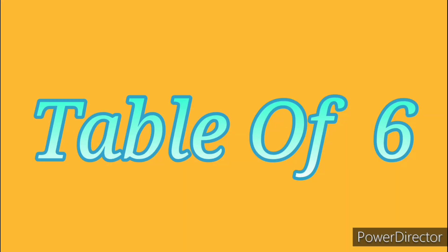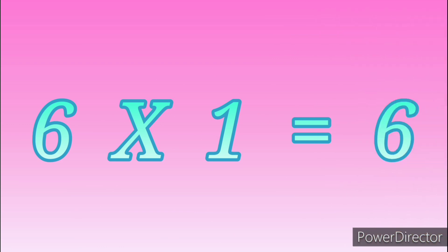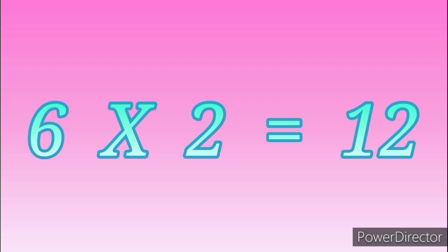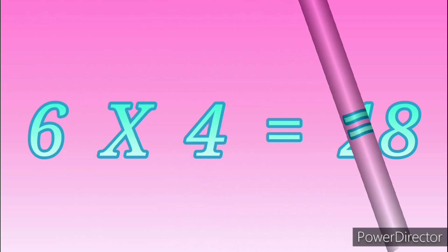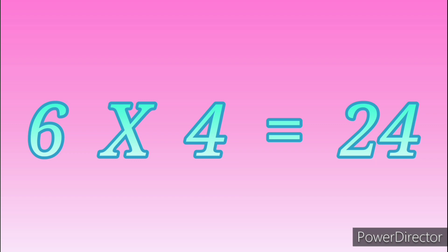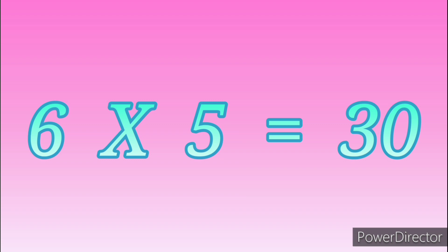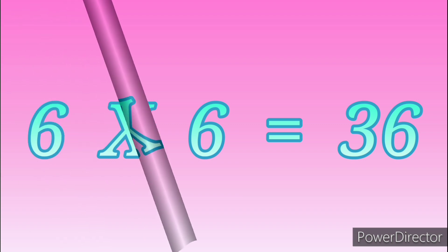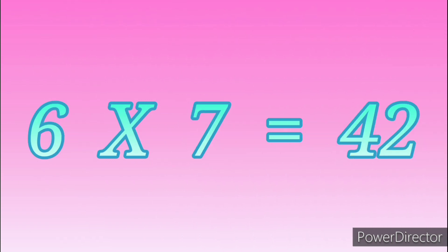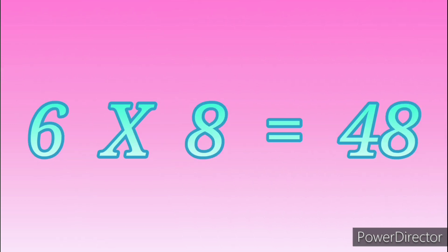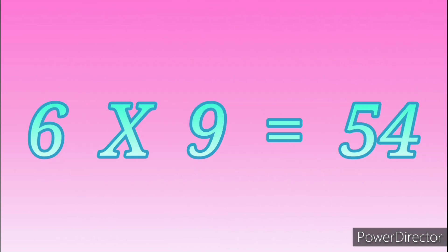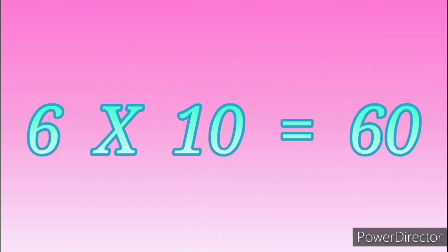Table of Six. Six ones are six. Six twos are twelve. Six threes are eighteen. Six threes are eighteen. Six fours are twenty-four. Six fives are thirty. Six sixes are thirty-six. Six sevens are forty-two. Six eights are forty-eight. Six nines are fifty-four. Six nines are fifty-four. Six tens are sixty. Six tens are sixty.